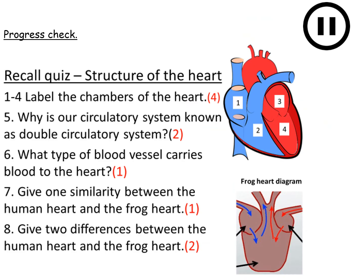Here's your final progress check of the lesson — a recall quiz about the structure of the heart. Write numbers one to eight. Questions 1–4: label the four chambers of the heart diagram. Question 5: why is our circulatory system known as a double circulatory system? Question 6: what type of blood vessel carries blood to the heart — specifically the vessel feeding chamber one? Question 7: give one similarity between the human heart and the frog heart. Question 8: give two differences between the human heart and the frog heart. Press pause; answers will play when you're ready.